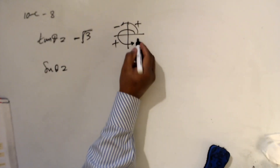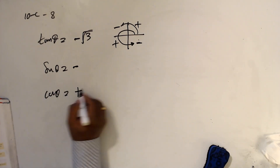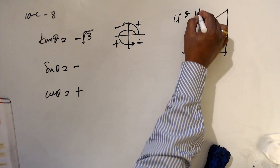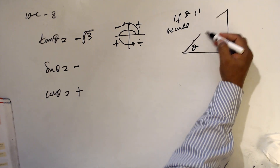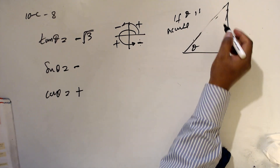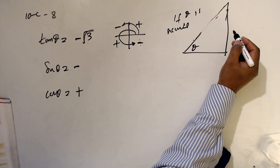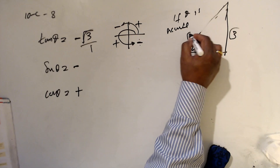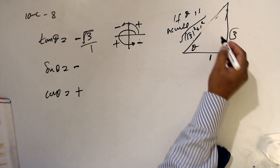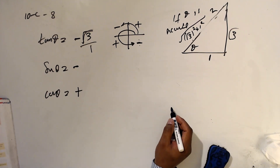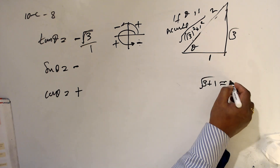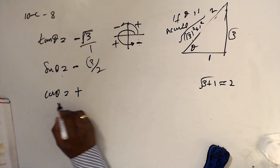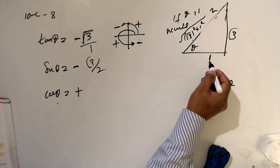In the fourth quadrant, sin θ is negative and cos θ is positive. If θ were acute, tan θ = √3/1, so the opposite is √3 and adjacent is 1. Then the hypotenuse is √(3² + 1²) = √4 = 2. So sin θ = √3/2 and cos θ = 1/2.